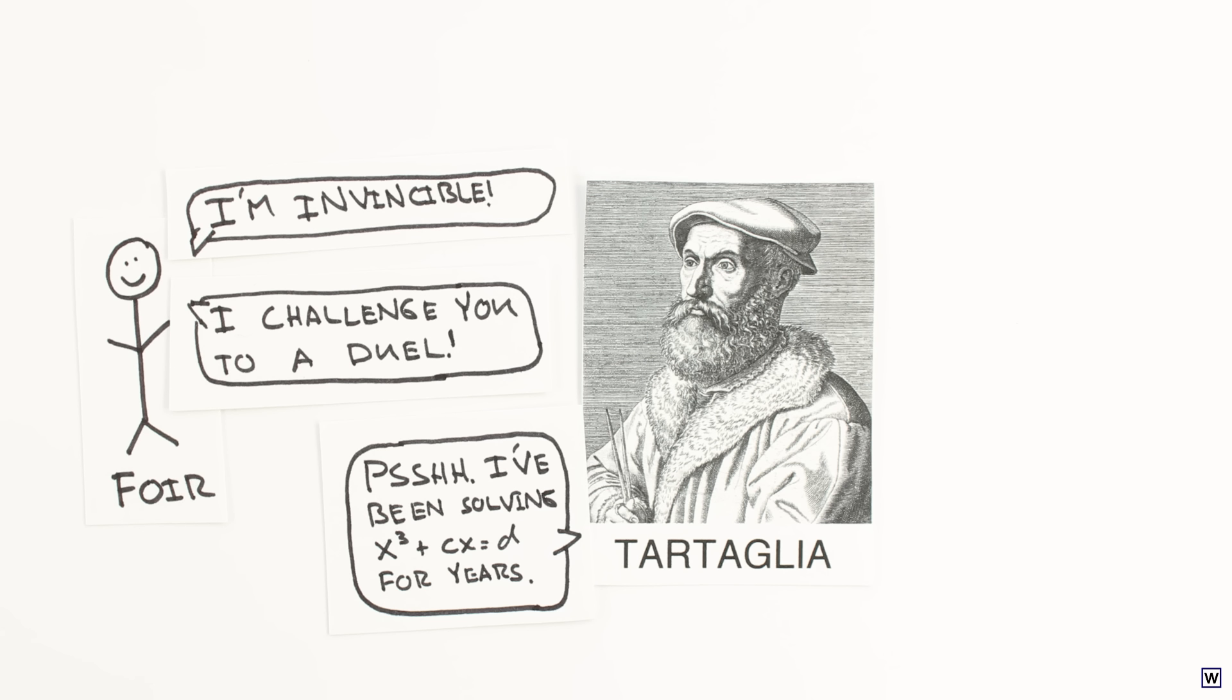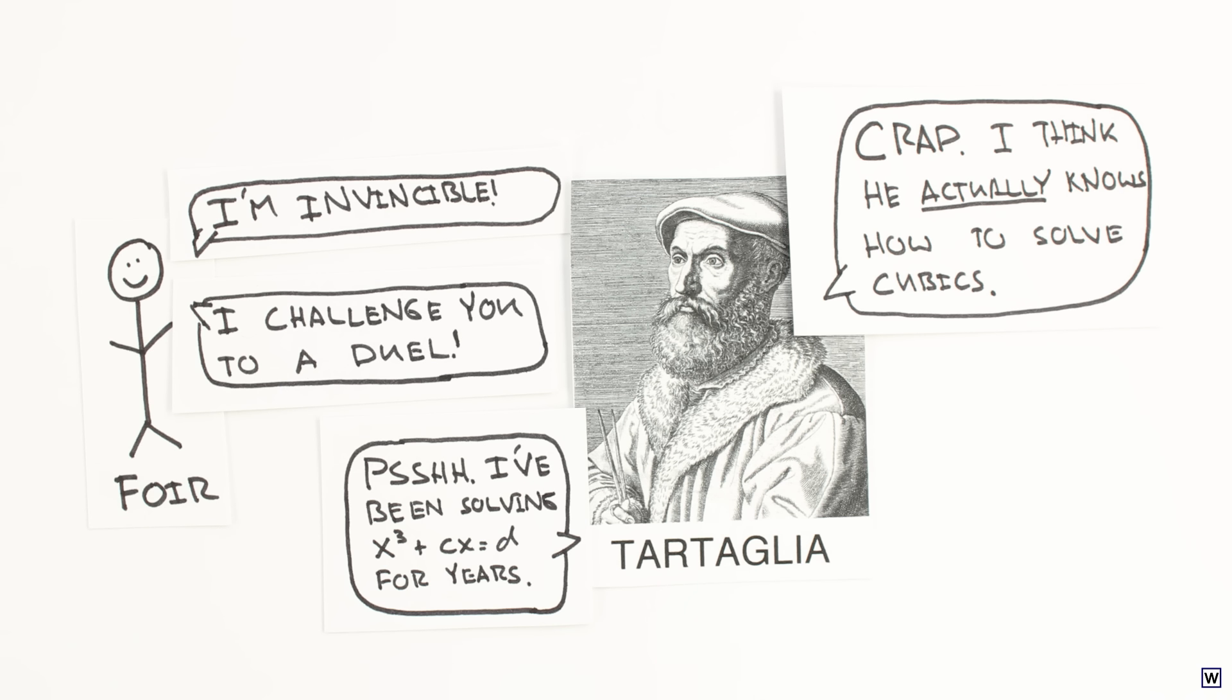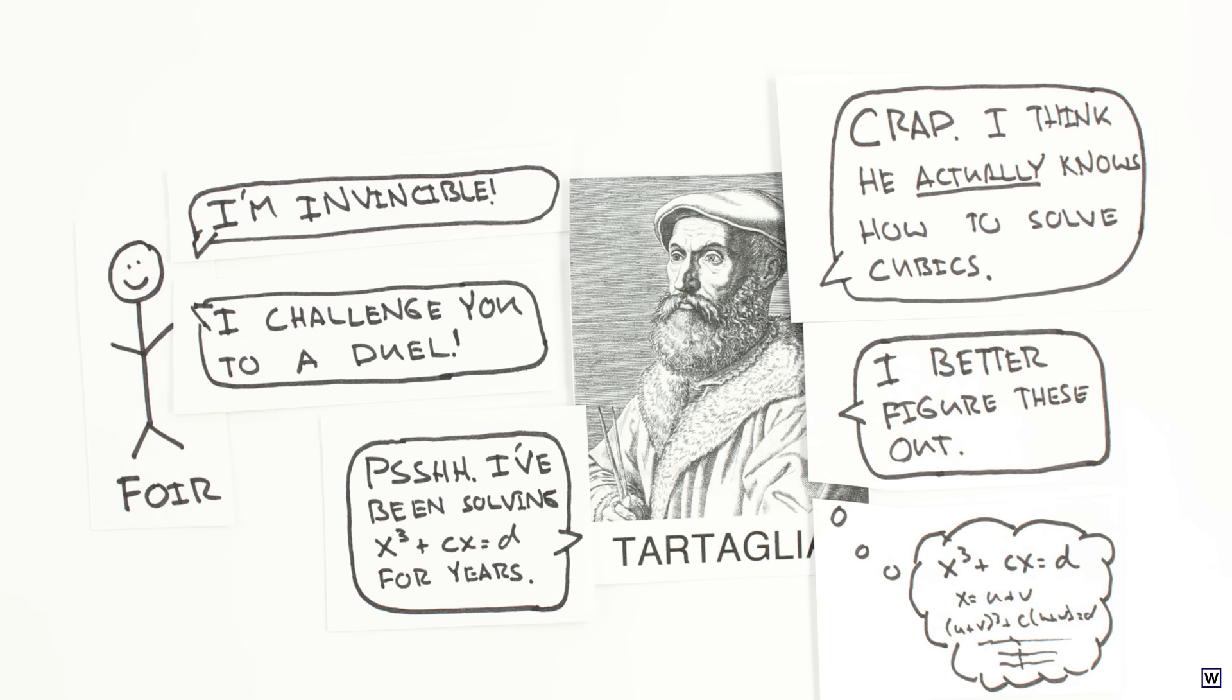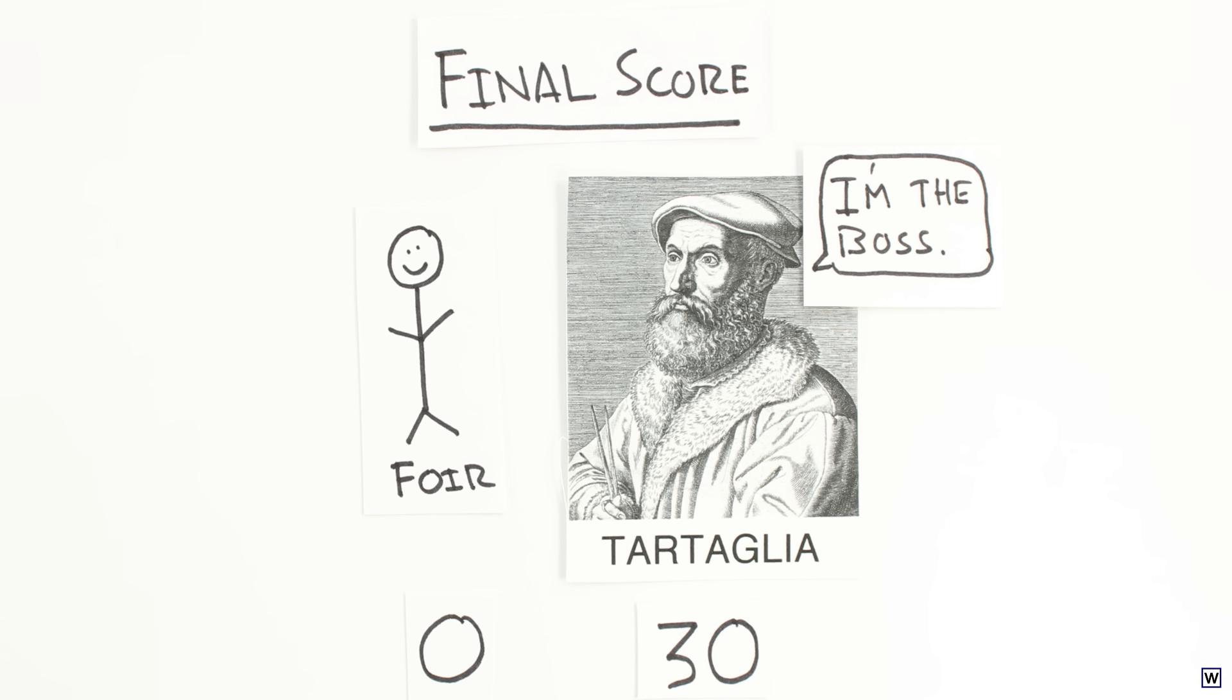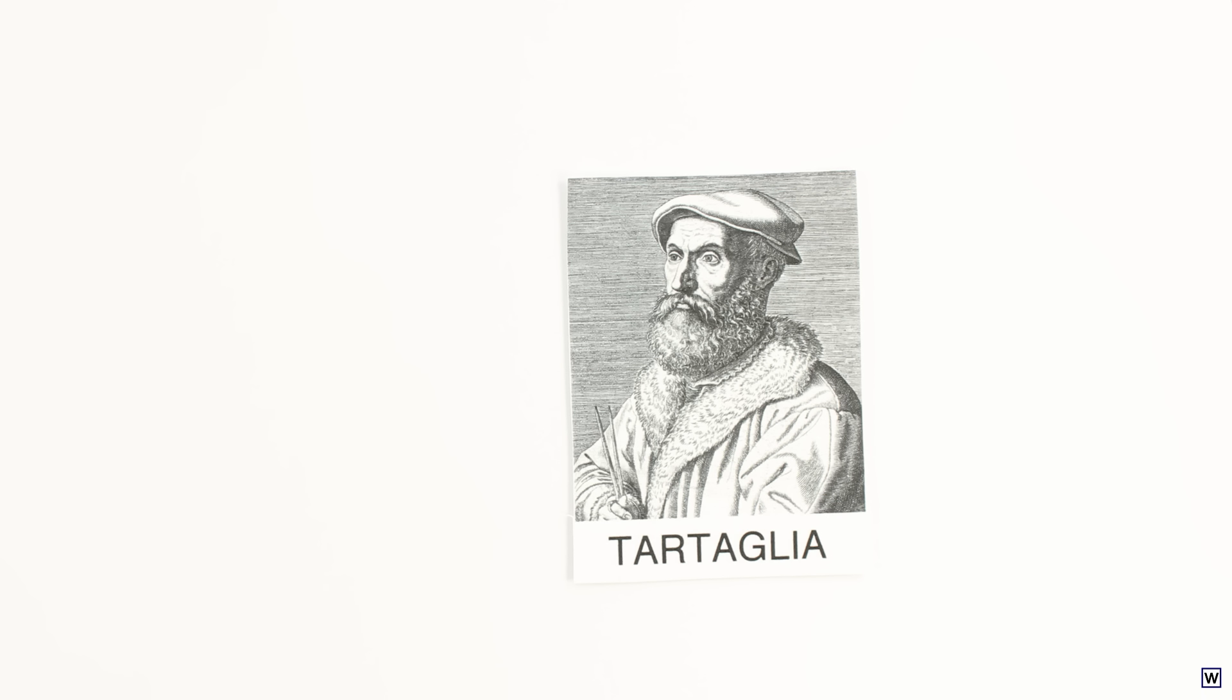Tartaglia had already claimed he could solve cubic equations like this, but had actually been totally faking it. Tartaglia freaked out before the math off and actually figured out how to solve these equations at the last minute and proceeded to completely dominate Foer. Tartaglia then went on to share his formula with the world. Not really, he kept it super secret so he could keep kicking butt in math duels.